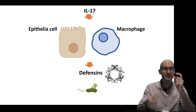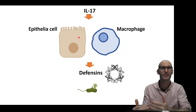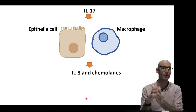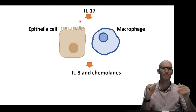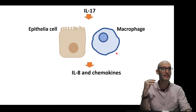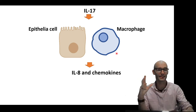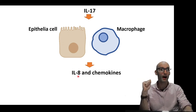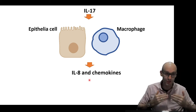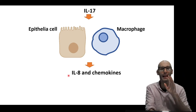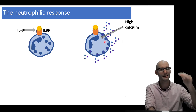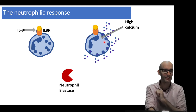So IL-17 causes a whole bunch of genes to flip on in macrophages and epithelial cells to produce antifungal and antibacterial proteins such as defensins. It also gets them to produce IL-8 and chemokines. IL-17 is a major neutrophil cytokine — it induces a massive neutrophil response, but it does it indirectly. It causes the parenchymal macrophages — the macrophages sitting in the tissue affected by the infection — and epithelial cells to pump out IL-8 and chemokines. Chemokines are cytokines that attract immune cells, specifically neutrophils into the tissue. IL-8 binds to the IL-8 receptor on neutrophils, which causes calcium flux, and calcium rushing into the cell causes degranulation.